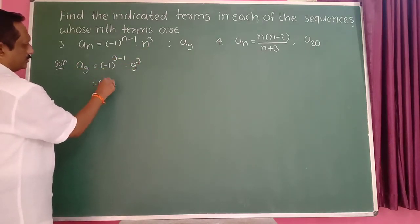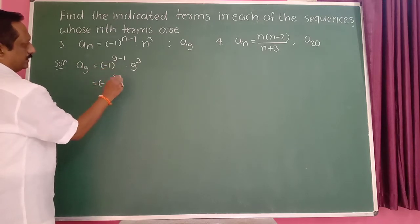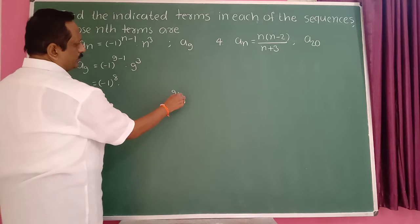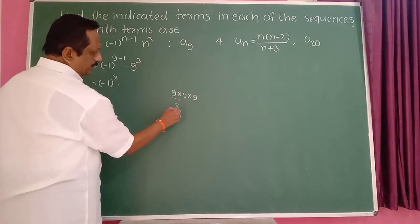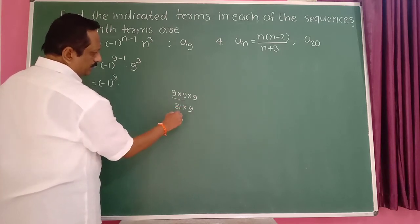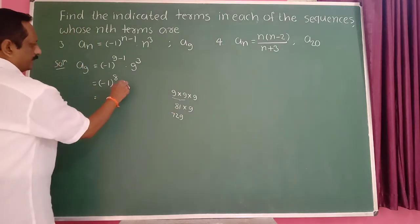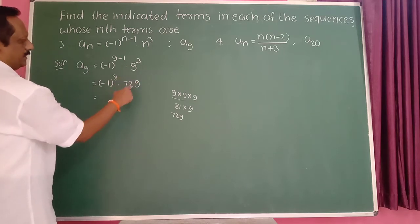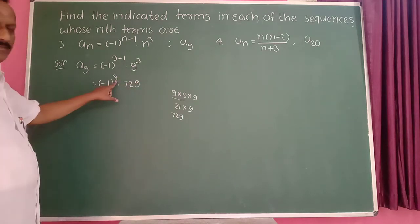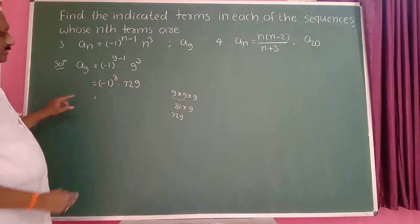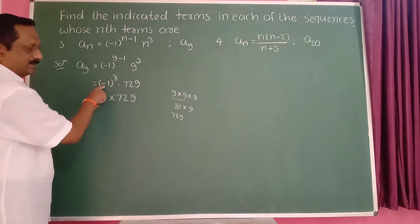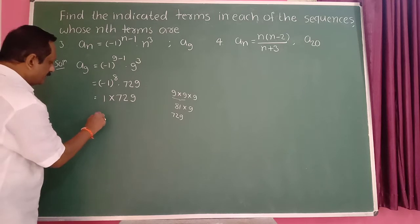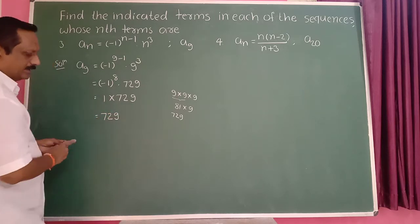This is equal to (-1) raised to 8, into 9 cubed. 9 into 9 is 81, into 9 is 729. Since the exponent 8 is an even number, (-1) raised to 8 becomes positive 1. So 1 into 729 is 729.